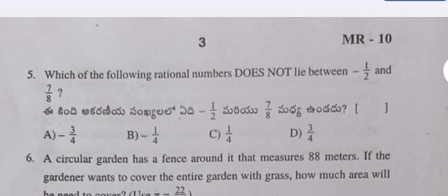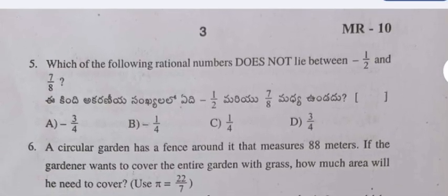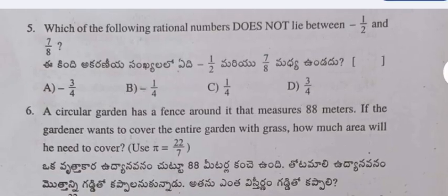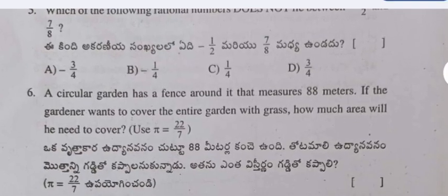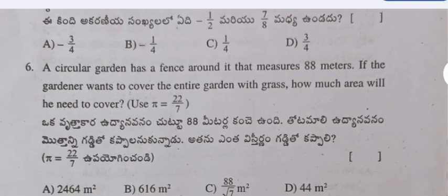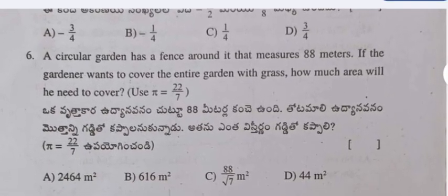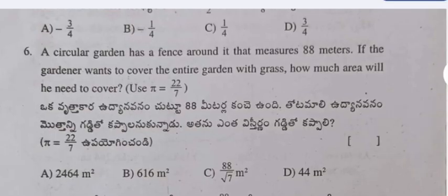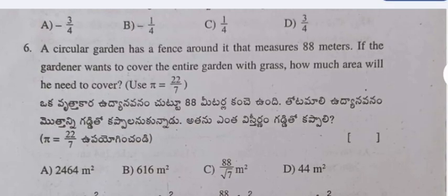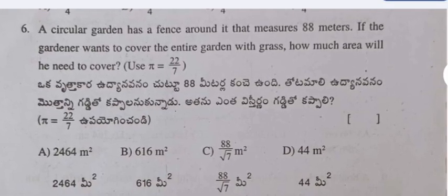Question 5: Which of the following rational numbers does not lie between minus 1 by 2 and 7 by 8? Question 6: A circular garden has a fence around it that measures 88 meters. If the gardener wants to cover the entire garden with grass, how much area will he need to cover?